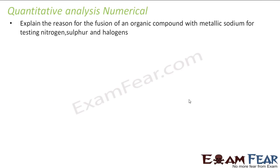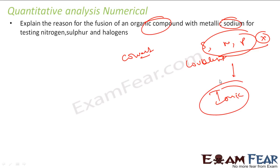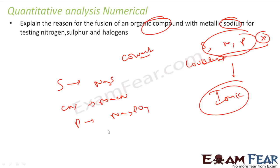The reason we fuse organic compounds with sodium metal is because the elements like sulfur, nitrogen, and phosphorus are all covalent in nature, and we need to convert them to ionic form. Sulfur becomes Na₂S (ionic); carbon-nitrogen becomes NaCN (ionic); phosphorus becomes Na₃PO₄. So we fuse them with sodium to make the elements ionic and thus detectable by standard ionic tests.